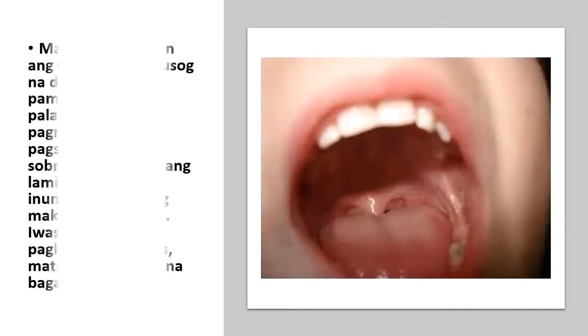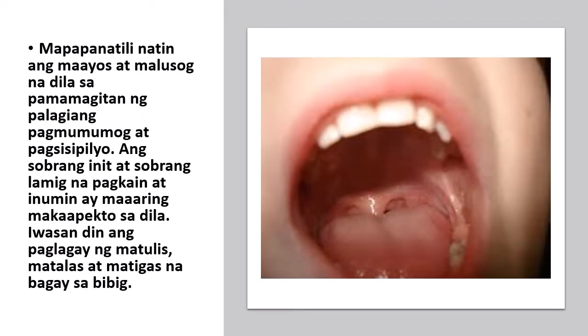Pangangalaga ng dila. Paano natin naalagaan ang ating dila? Mapapanatili natin ang maayos at malusog na dila sa pamamagitan ng palaging pagmumumog at pagsisipilyo. Ang sobrang init at sobrang lamig na pagkain at inumin ay maaaring makaapekto sa dila. Iwasan din ang paglagay ng matulis, matalas, at matigas na bagay sa bibig.